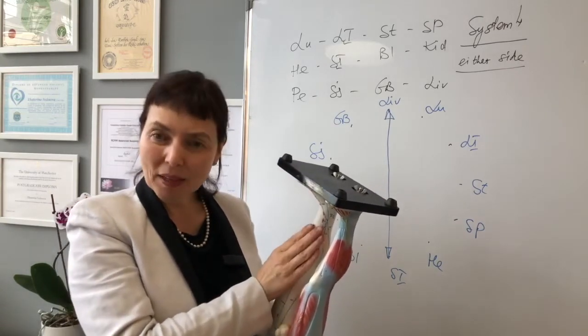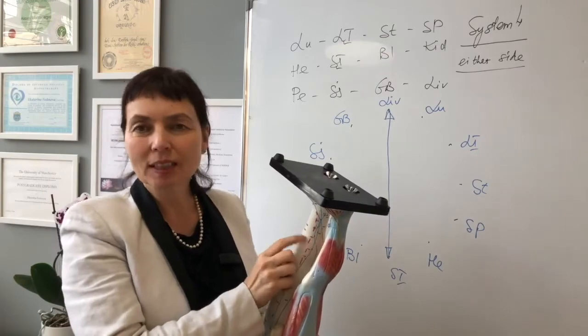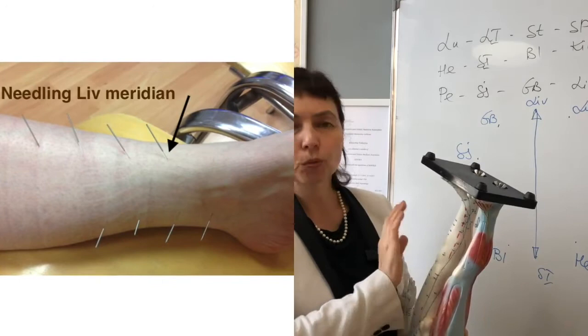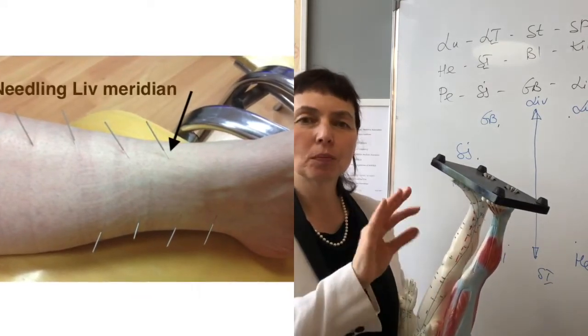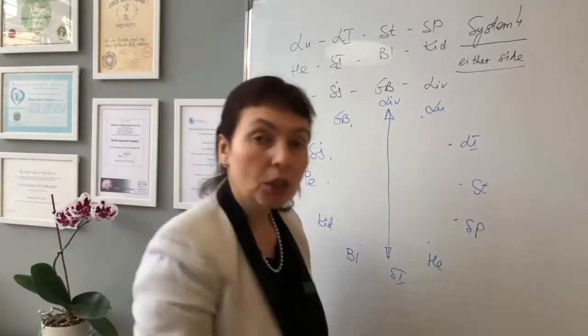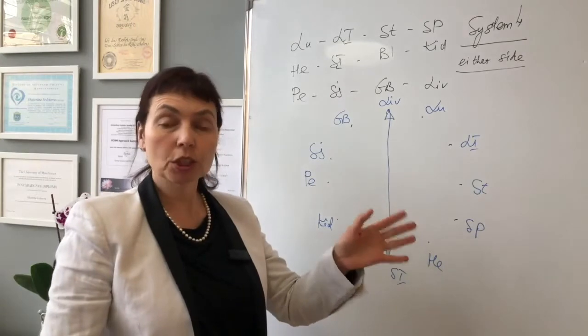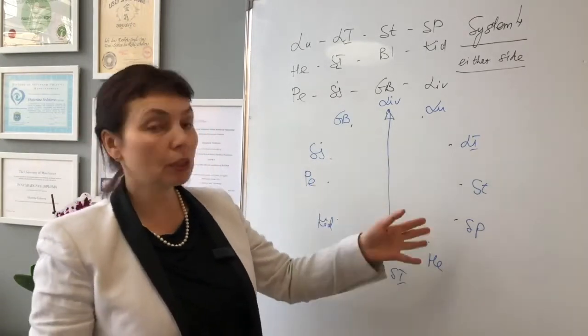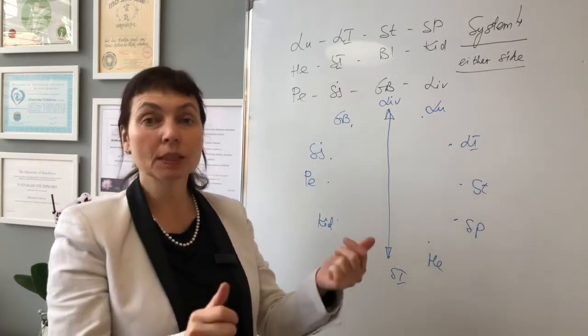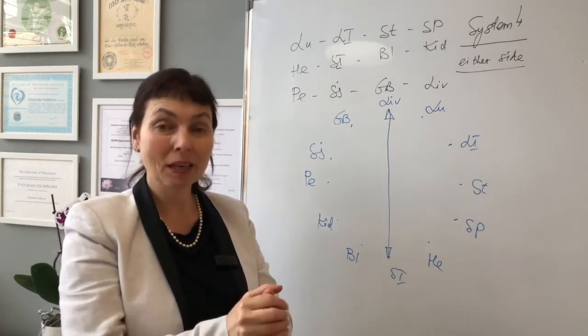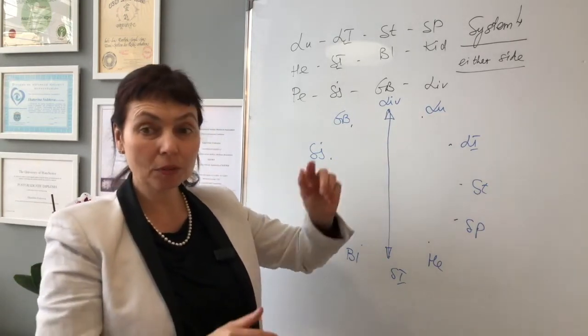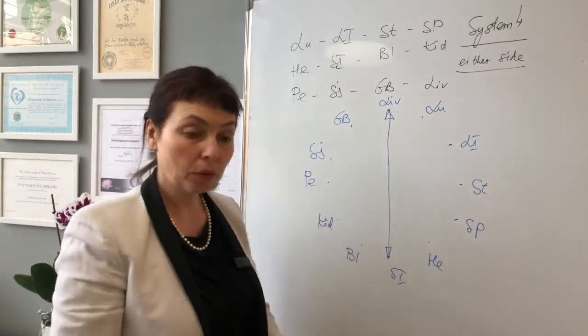In balance method, we need the liver channel slightly different. We need the liver channel as Dr. Tan taught us. And it works amazingly to compensate any pain in small intestine on the scapula. You can choose any system that will work. According to System 1, what are we going to needle? Bladder. According to System 2, what will we needle? Heart meridian. And according to System 4, that will be liver.